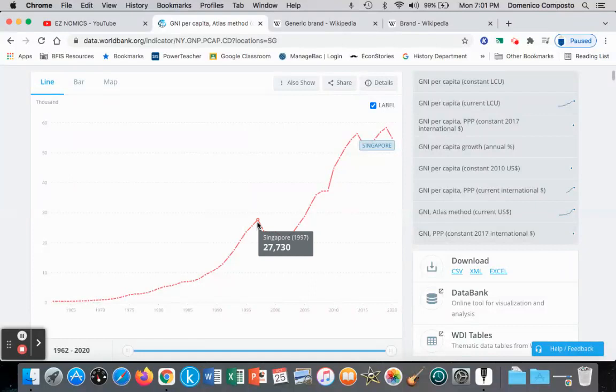So here we see in 1997, this is the Asian financial crisis, gross national income fell from $27,000 approximately to $22,000. Or in 2014, it fell from $56,000 to $53,000. But here's a better example, 1997. So incomes are falling from $27,000 to $22,000.